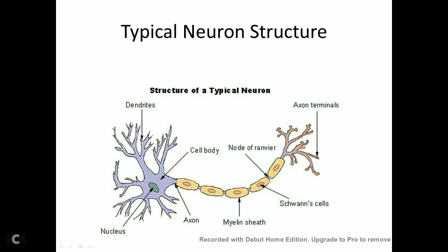Now let's talk about the typical neuronal structure. You have these axon terminals. Neurons basically connect to one another throughout the whole body — it's a big network of cells that all communicate with one another in highly complex ways. But if you break them down, you have three major parts of the neuron: the axon terminals, the axon, and the dendrite.